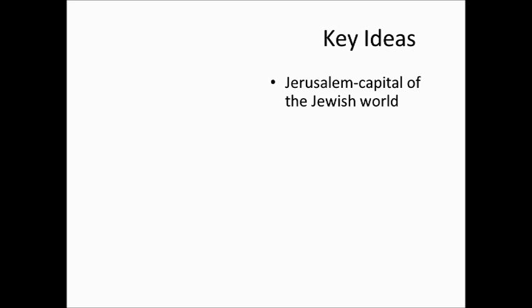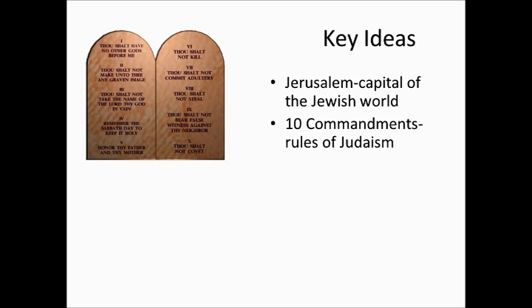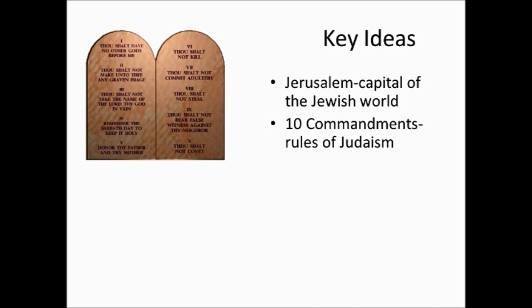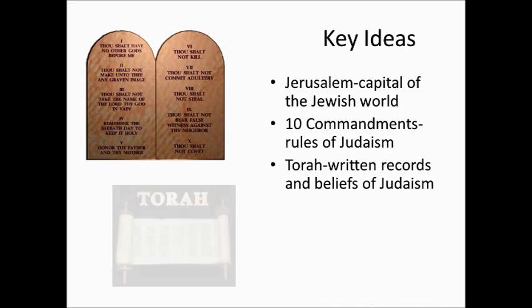Jerusalem is the capital city of the Jewish world. The Ten Commandments were the rules of Judaism — unless you believe there were 15, like in the History of the World video on your links. Things like thou shalt not kill and thou shalt not steal. The Torah are the written records and beliefs of Judaism — remember that the Torah makes up the first five books of the Old Testament.